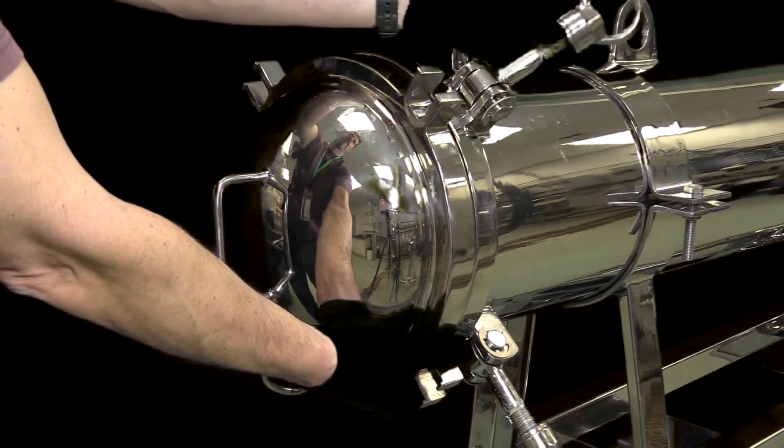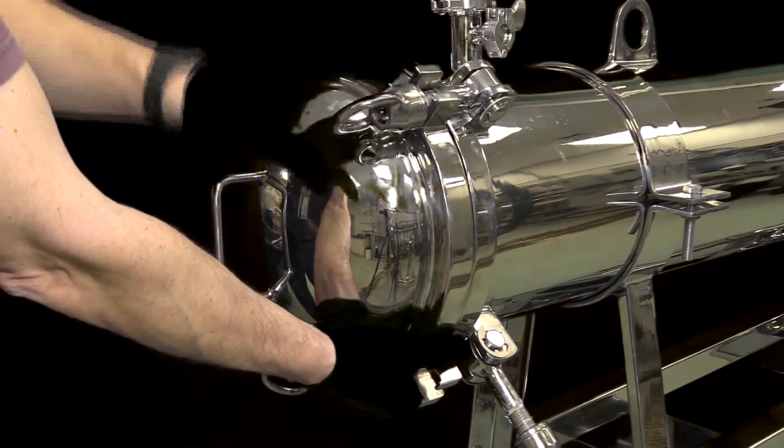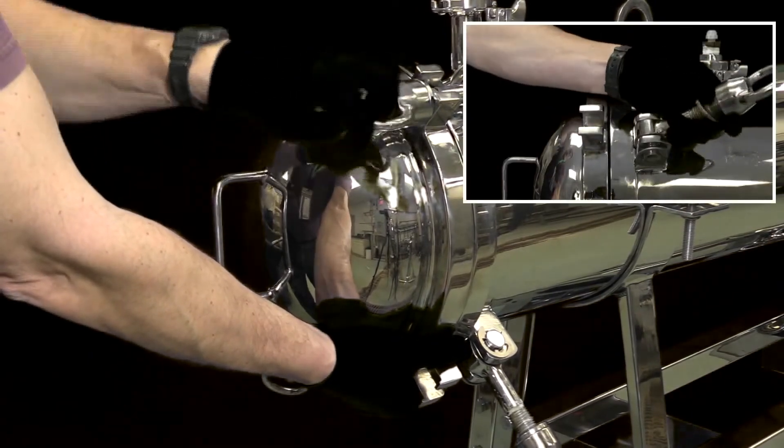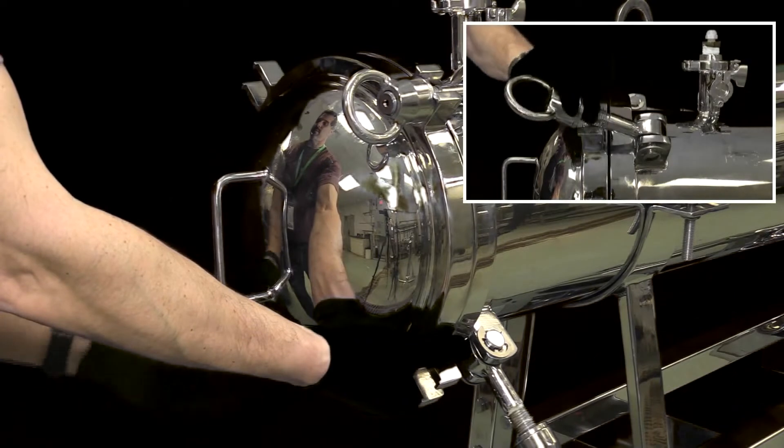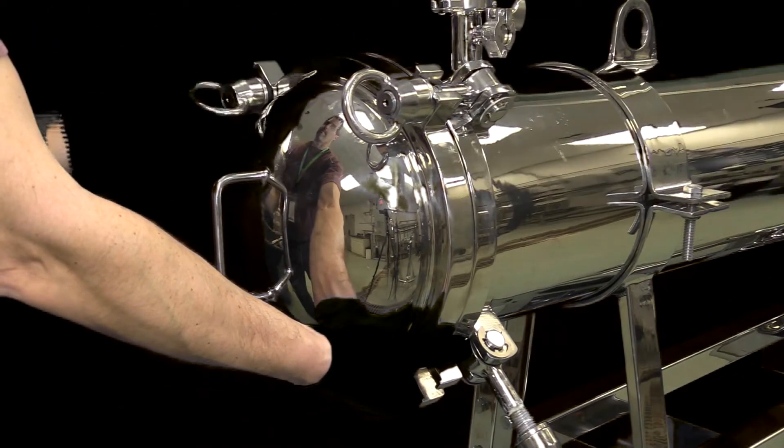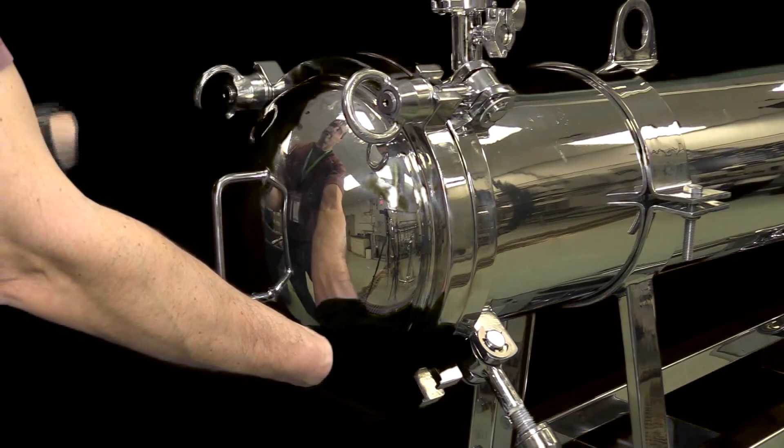Move each of the four clamps into the slots on the housing lid, ensuring the washer on each is at the top of the threaded post. While keeping the housing lid roughly aligned with the housing, hand tighten each of the four clamps.